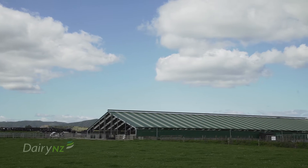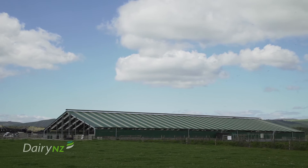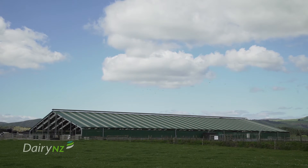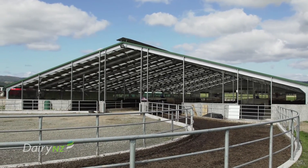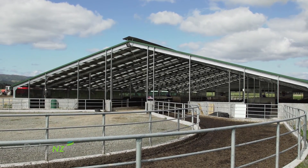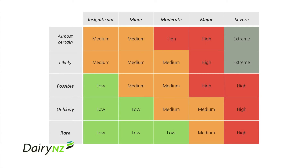Risk management needn't be complicated, but it is important. It is essentially about what your response is to things that might impact your ability to meet your farm business objectives, and animal housing is one thing you need to evaluate. Look at things from the perspective of how likely they are to occur and when — whether they're likely to happen regularly and soon, or hardly ever and a long way in the future.